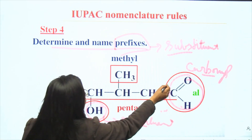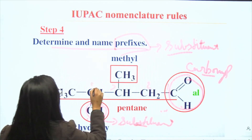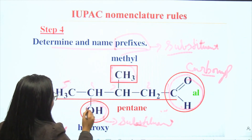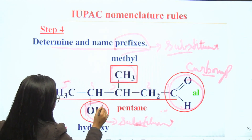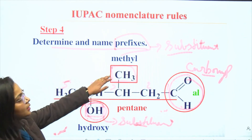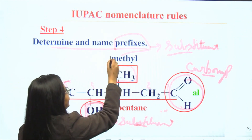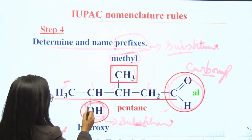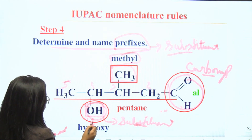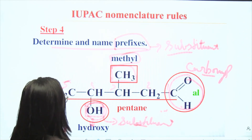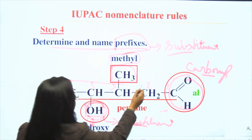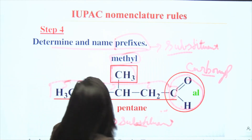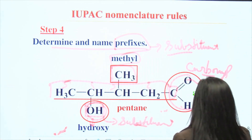In this particular compound the chain has five carbons, and we have two substituents. For the methyl substituent we use 'methyl', and for the OH we use the prefix 'hydroxy'. The main chain we have already named pentane. This completes the fourth step of the nomenclature.